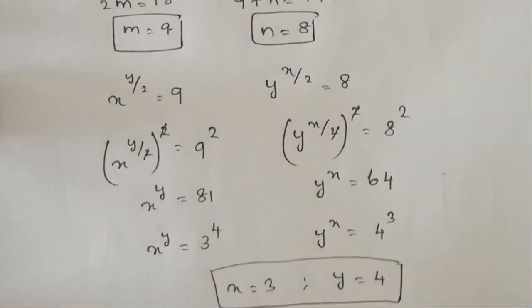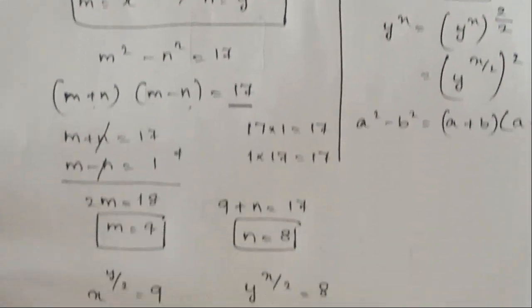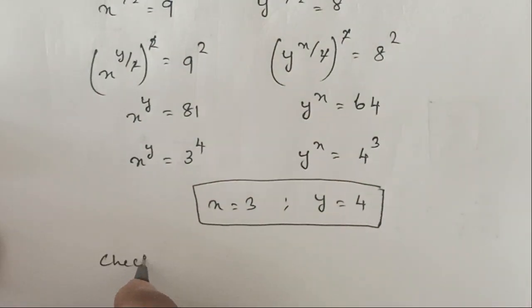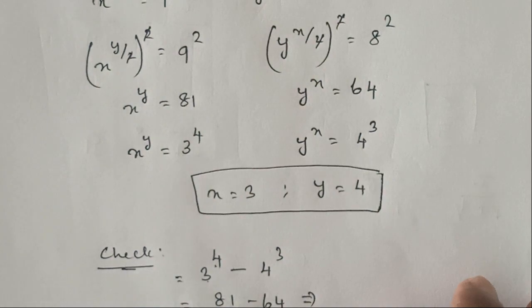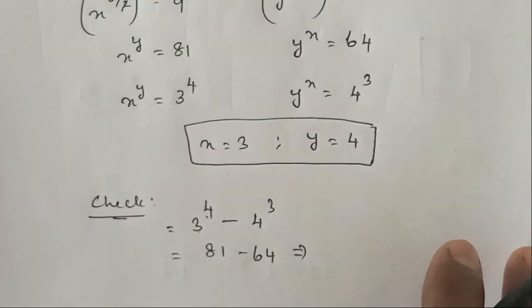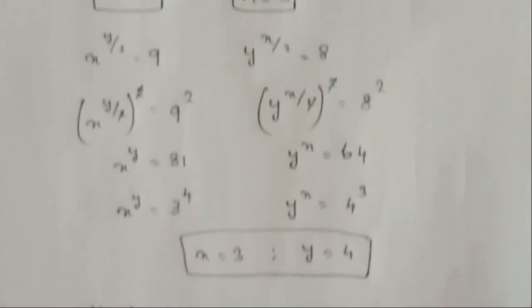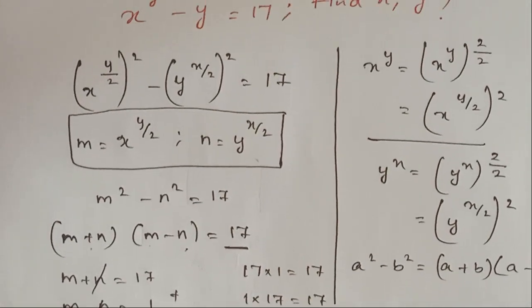So the question is we want to find x and y. So now we check this. So check is like 3^4 - 4^3. 3^4 is 81 minus 4^3 is 64. 81 minus 64 is 17. So we got the value of 17. So the given equation is the same.